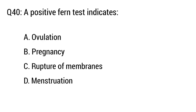Question number 40. A positive ferning test indicates — the right option is option C: Rupture of membranes.